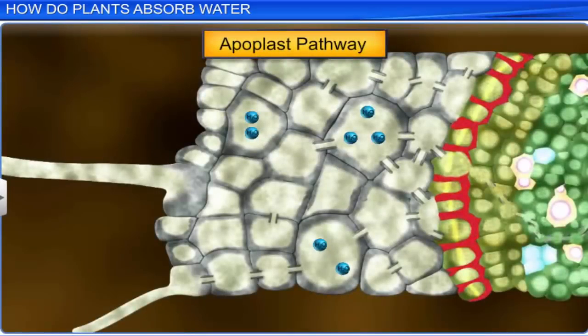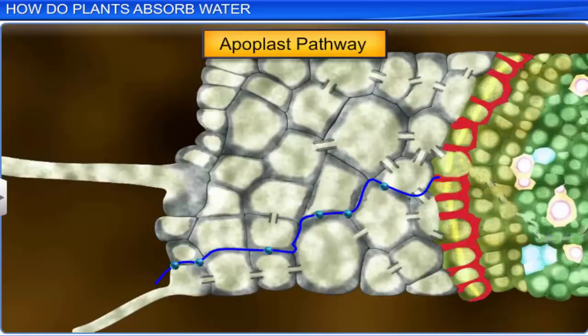As water evaporates in the intercellular space, it creates tension in the water flowing inside the apoplast. Mass flow is thus propelled by the adhesive and cohesive properties of water.